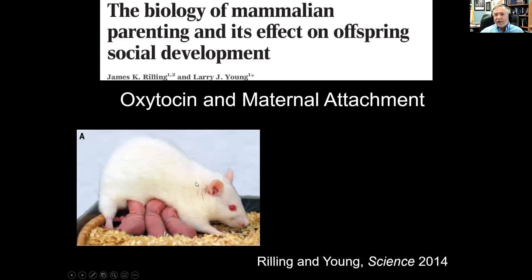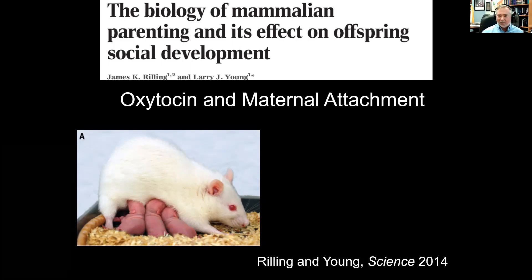When female rats go through the hormones of pregnancy, something happens in their brain — it's transformed so that they then want to become a mother and care for offspring. There's a classic study from the sixties where female rats who had given birth were trained to press a lever to get pups delivered down a chute, and they would press it hundreds of times. The same stimulus that was once aversive becomes irresistible.